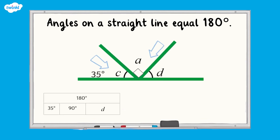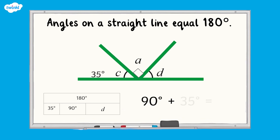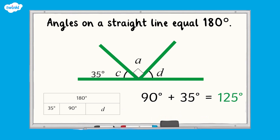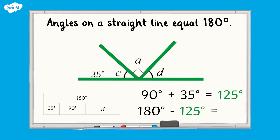This time it has two known angles and one unknown angle, angle D. Before we can calculate the missing angle, we must first add the two known angles together. Angle A is a right angle which is 90 degrees, so 35 degrees add 90 degrees is 125 degrees. We can now subtract this value from 180 degrees. 180 degrees subtract 125 degrees is equal to 55 degrees, so angle D is 55 degrees.